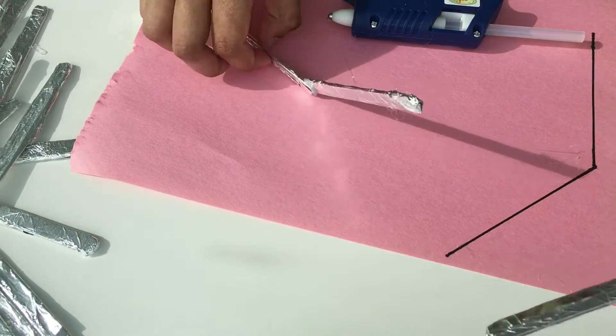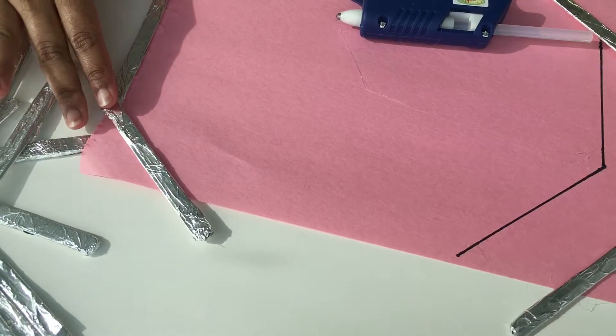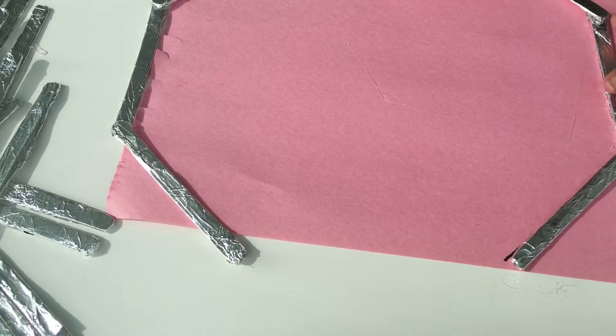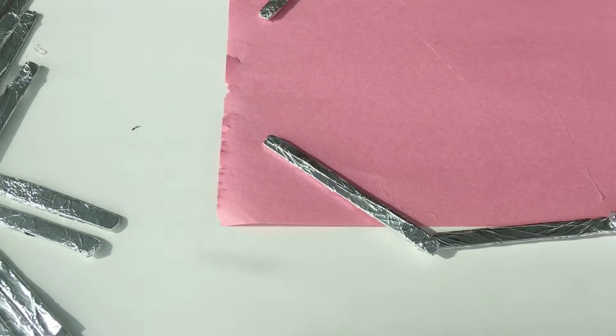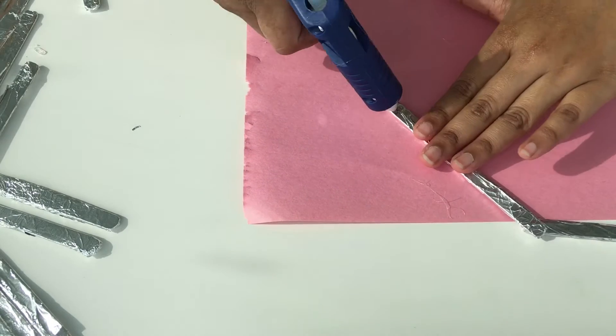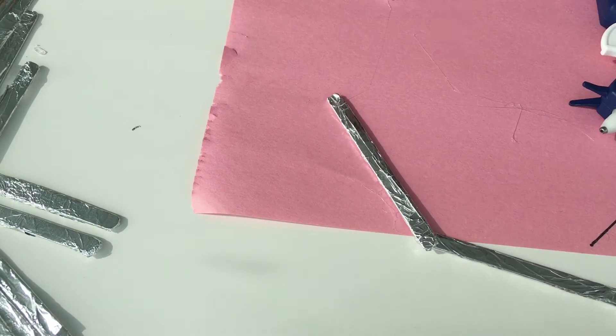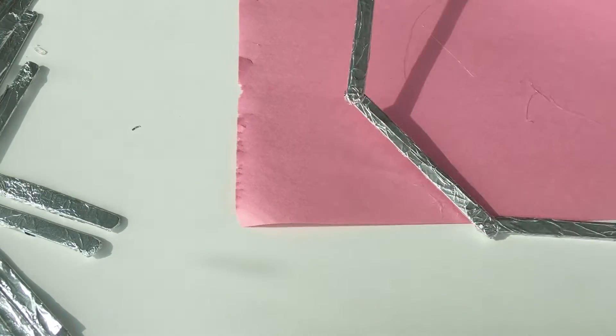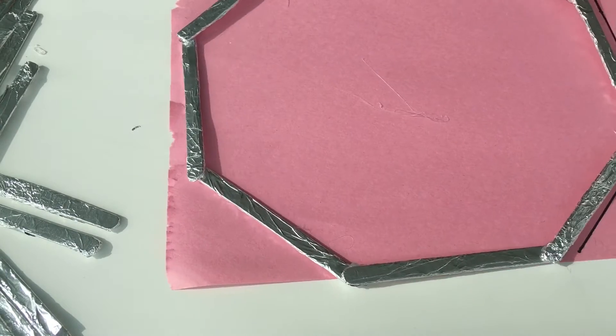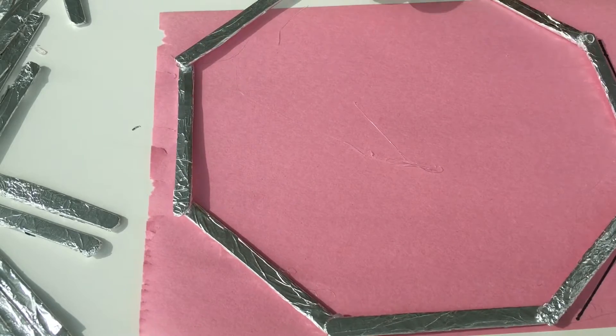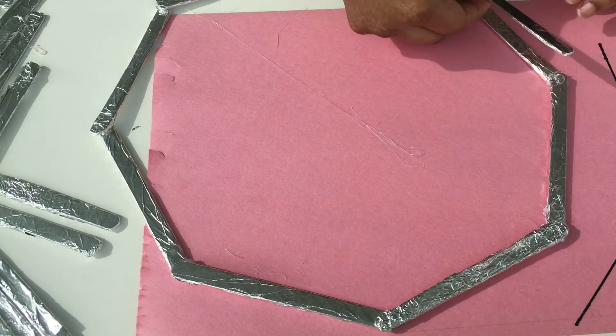Once the two halves were made, I joined them together with two more sticks. Once the octagon base was complete, I kept on adding layers until I was happy with the depth.